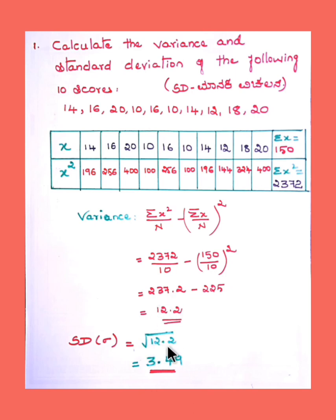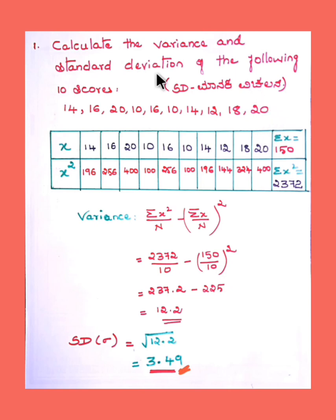So the variance is 12.2. Standard deviation is the square root of variance, so square root of 12.2 is approximately 3.49. That is the answer. Since the HSTR exam has multiple choice questions, you can quickly add the values, square them, substitute into the formula, and get the answer.